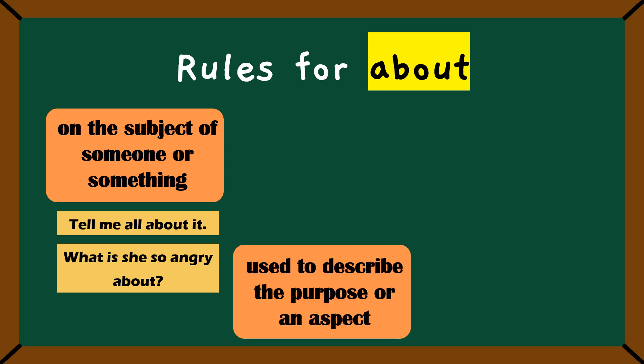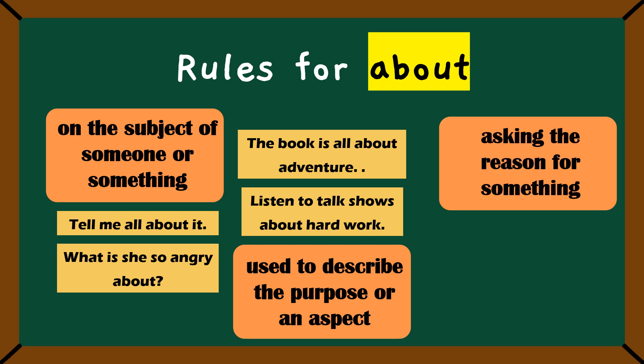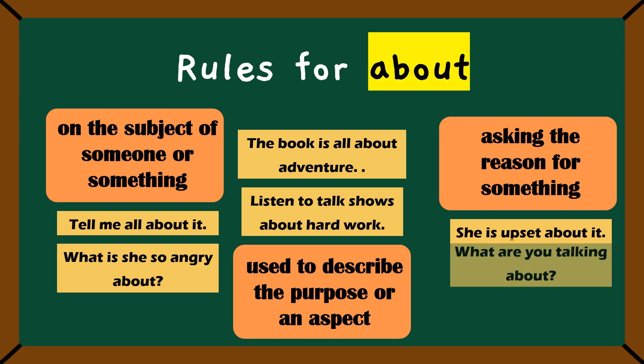Second rule: about can also show the purpose or an aspect of something. For example, listen to the talk shows about hard work. So, we are talking about hard work as the main idea or purpose here. Next example: the book is all about adventure. This means the whole story is on the topic of adventure. The last rule of the day is about can help us ask for reasons like she is upset about it. And if I ask, what are you talking about, it's like saying, what is the subject of your talk?